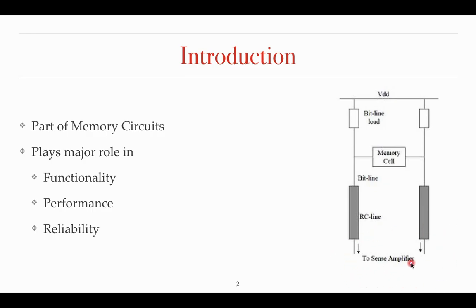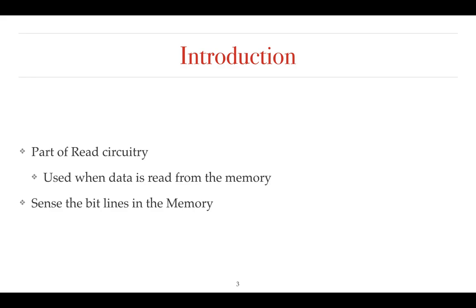Here comes the importance of sense amplifier. During the read operation, one bit line will give you 0 voltage and one bit line will give you 1. During the read operation, one of the bit lines will pull down to 0. From this information, a sense amplifier will decide whether the data present in the memory is 1 or 0. The sense amplifier is mainly a differential amplifier which senses the bit lines in the memory.